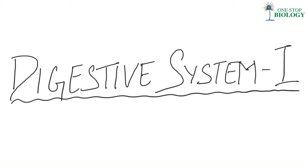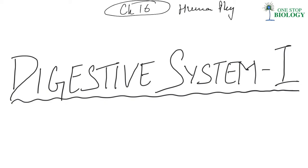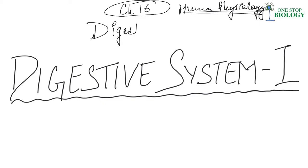Hey guys, welcome back to One Stop Biology. In today's video, we are going to start off with a new chapter, which is chapter 16 of class 11th. We have to study human physiology, and the first chapter in this unit is digestion and absorption.